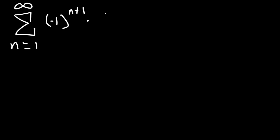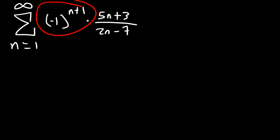Let's work on more examples. Consider the series from 1 to infinity: negative 1 raised to the n plus 1 times 5n plus 3 over 2n minus 7. Will this series converge or diverge? Since it has negative 1 to the n plus 1, it is an alternating series and we can apply the test. Here a sub n is 5n plus 3 over 2n minus 7.